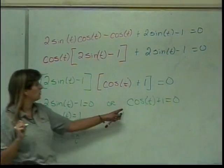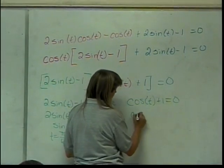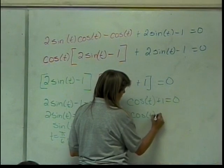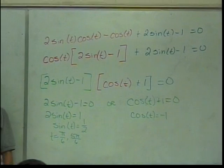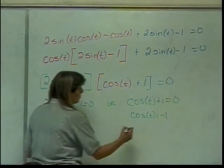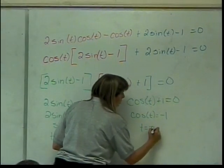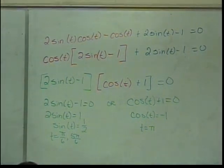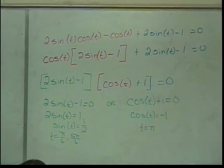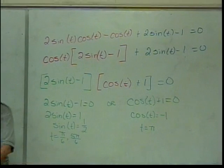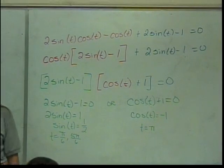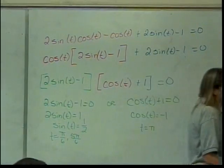Now let's do this piece — cosine of t equals negative 1. Where does cosine of t equal negative 1? That happens at t equals pi. If you've got your unit circle memorized, you can just spit these answers out. Otherwise you can work through the process.